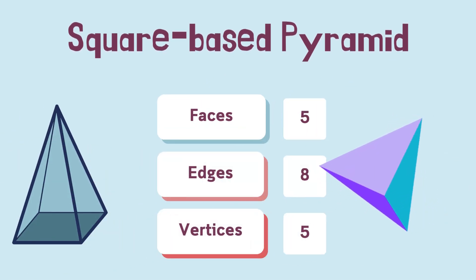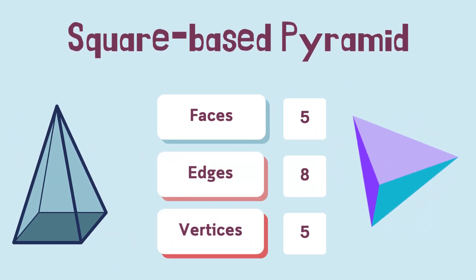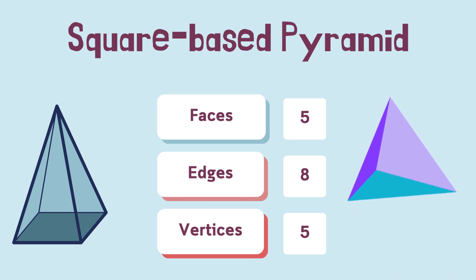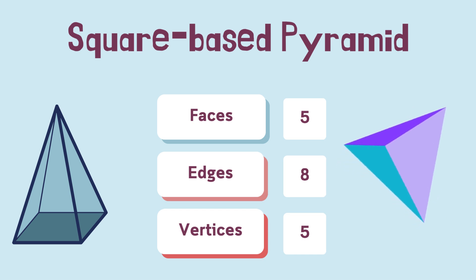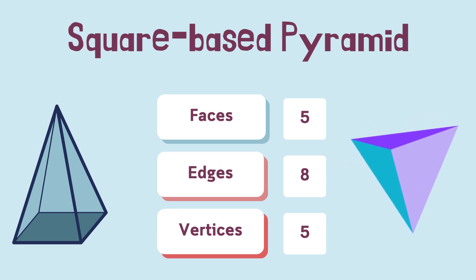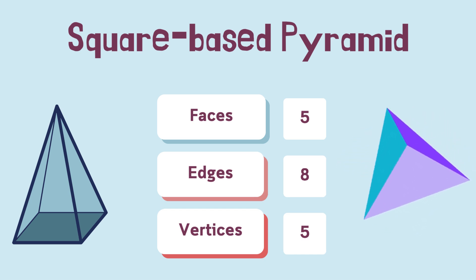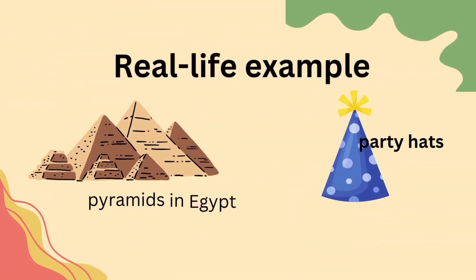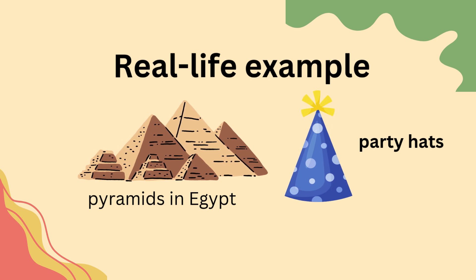Hi, friends. I'm a pyramid. I have five faces — one square and four triangles. I have eight edges and five vertices. I look like the pyramids in Egypt and some party hats, too.